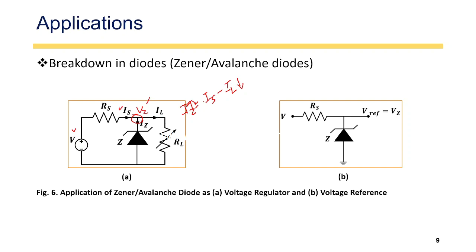Note that I_Z must remain less than I_Z(max) as specified in the datasheet of the Zener diode. This gives us a voltage regulator. Similarly, by connecting the Zener diode in reverse bias to ground, it provides a constant voltage drop of V_Z, serving as a voltage reference point. These are the two important applications — voltage regulator and voltage reference — of Zener and Avalanche breakdown in PN junction diodes. Thank you everyone.